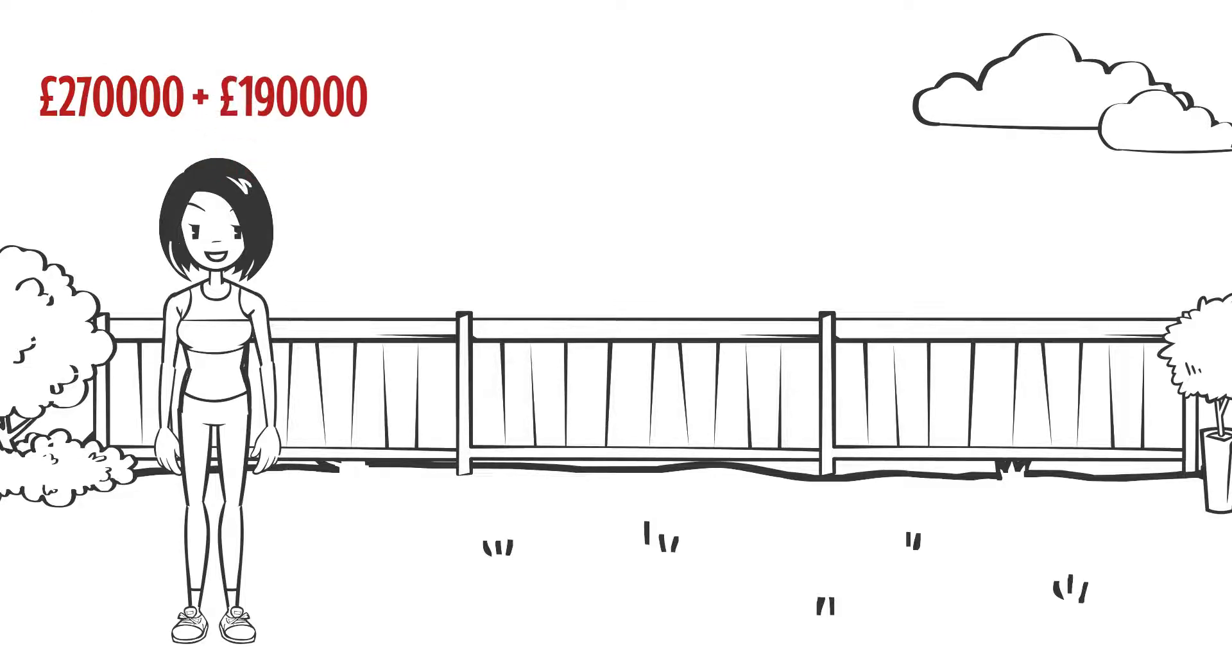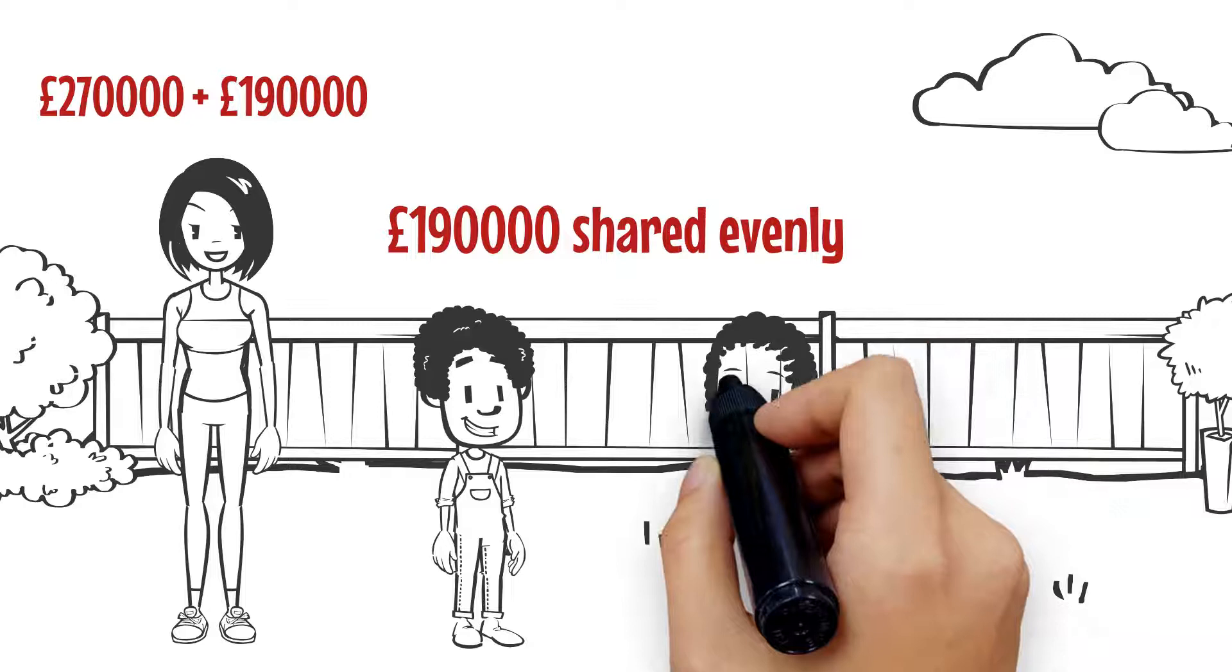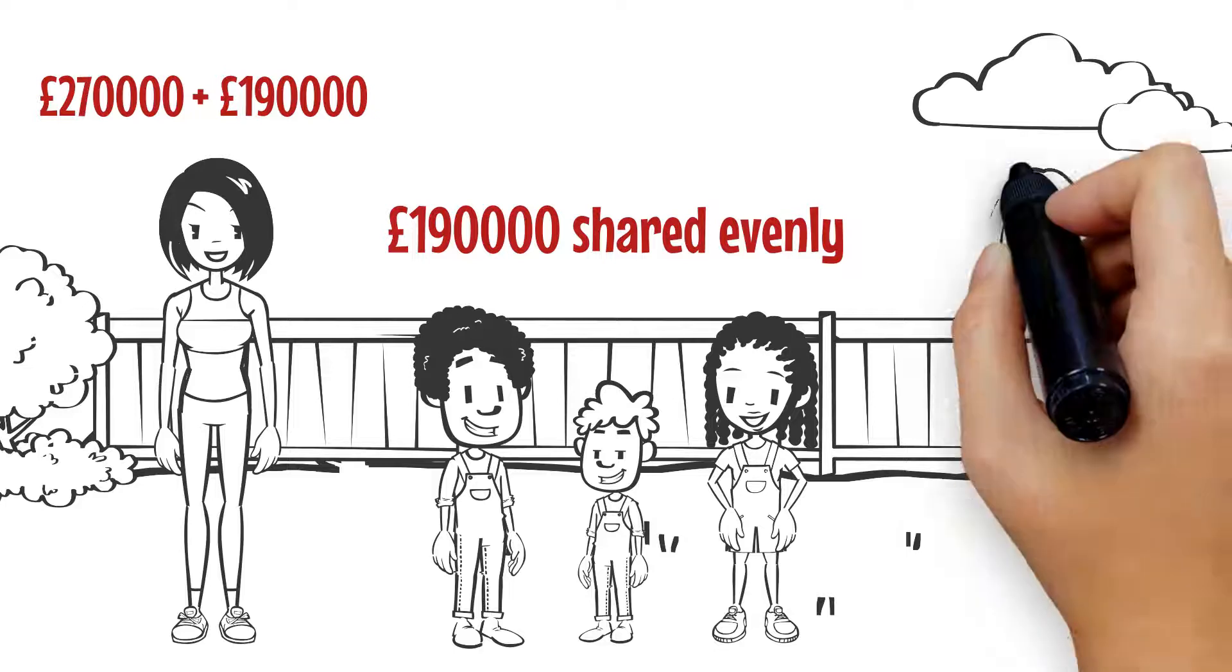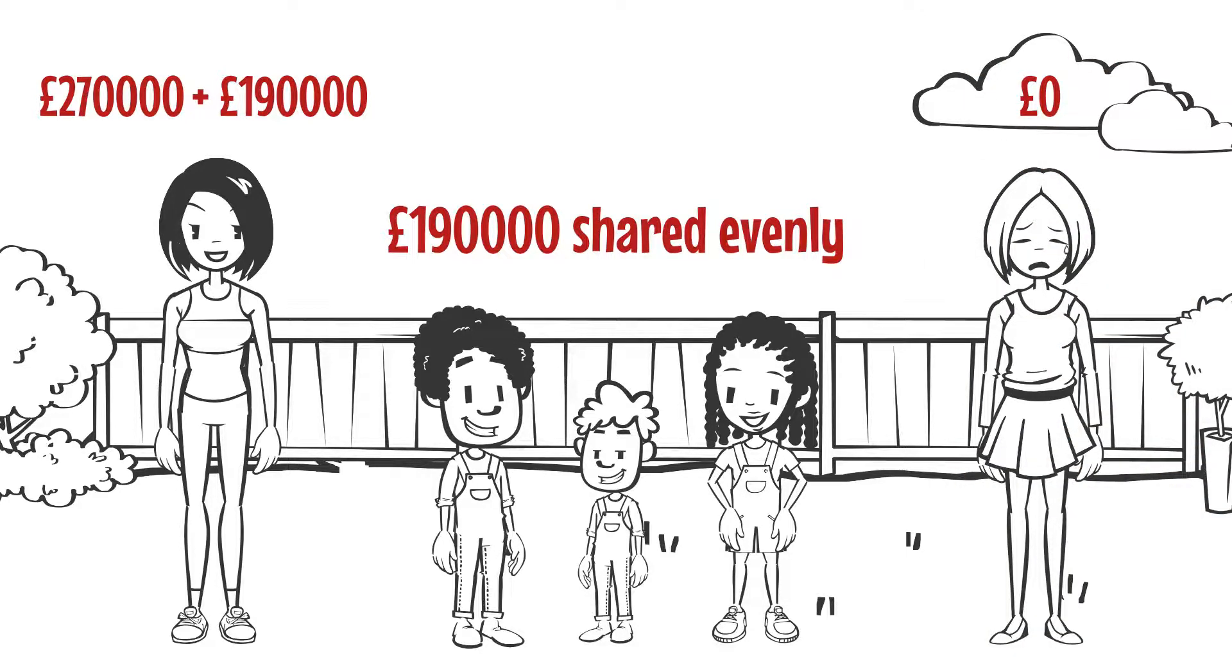Grace would get 50% of this, and the remaining £190,000 would be shared equally between Alan's children Tim, Annie and Mark. Barbara would not be entitled to any part of his estate.